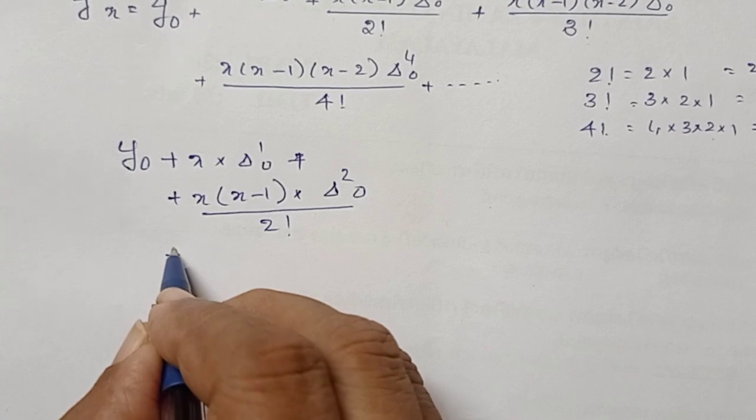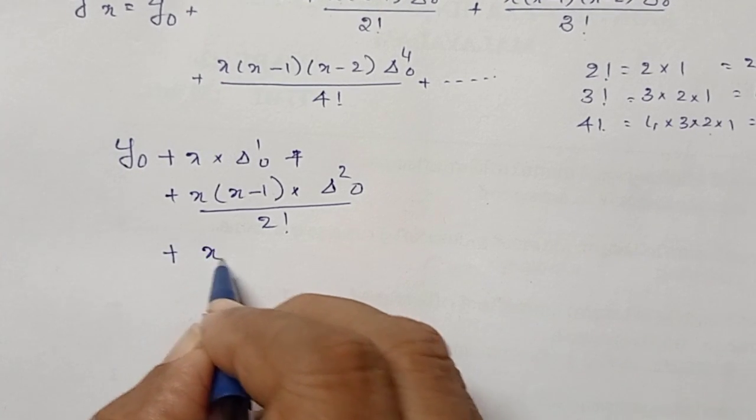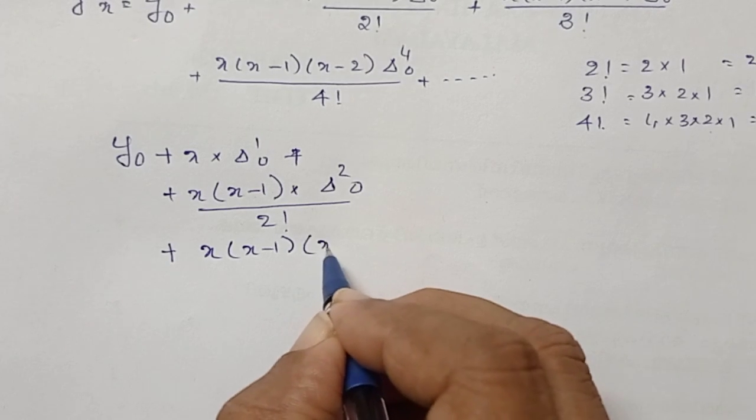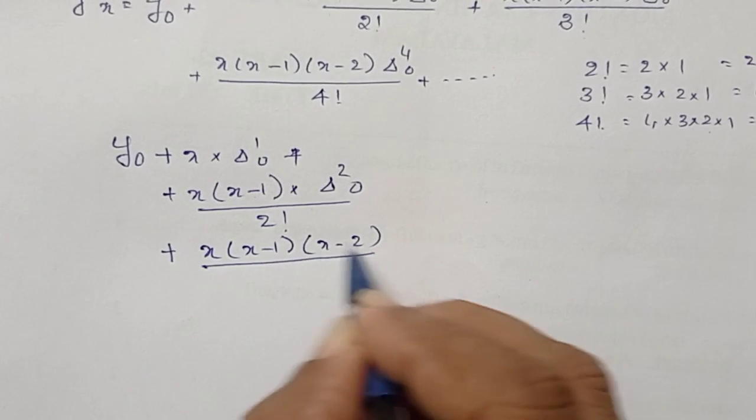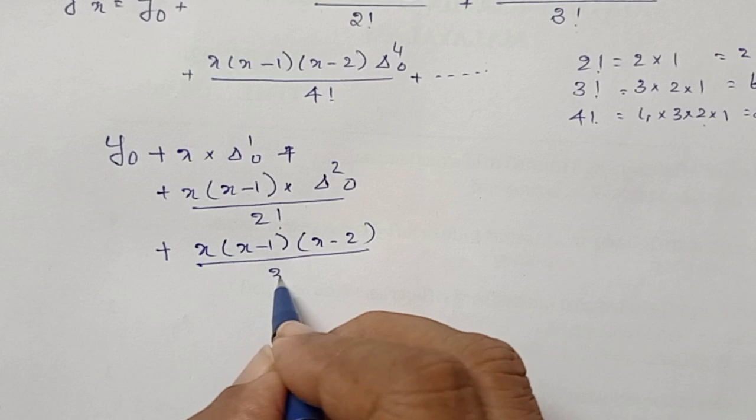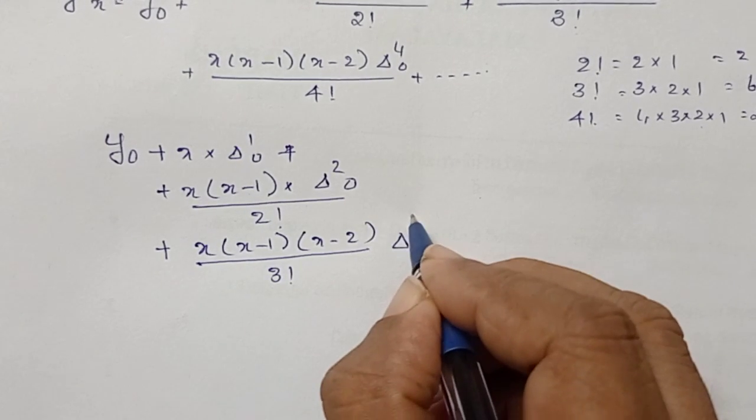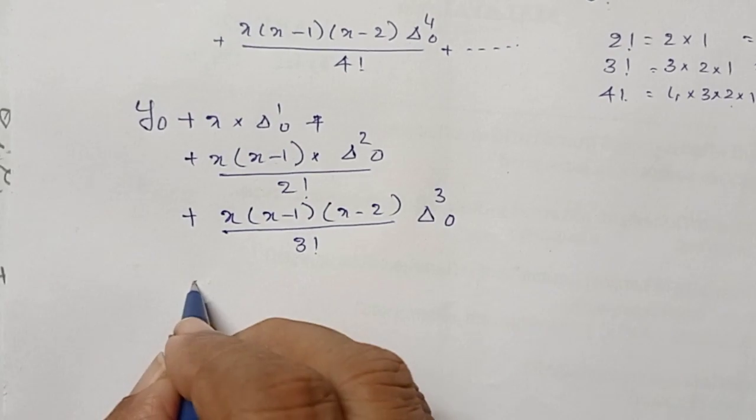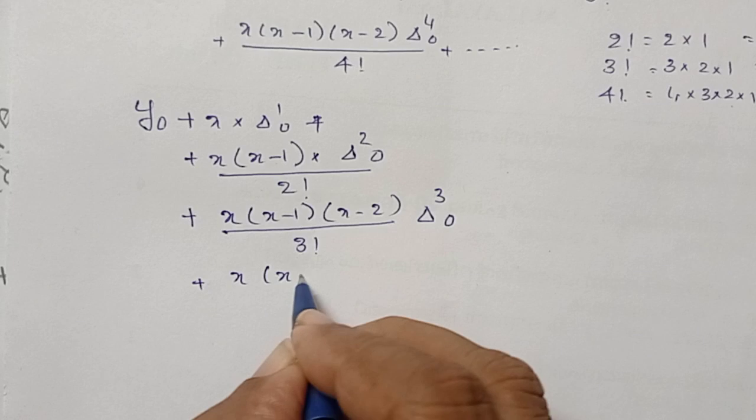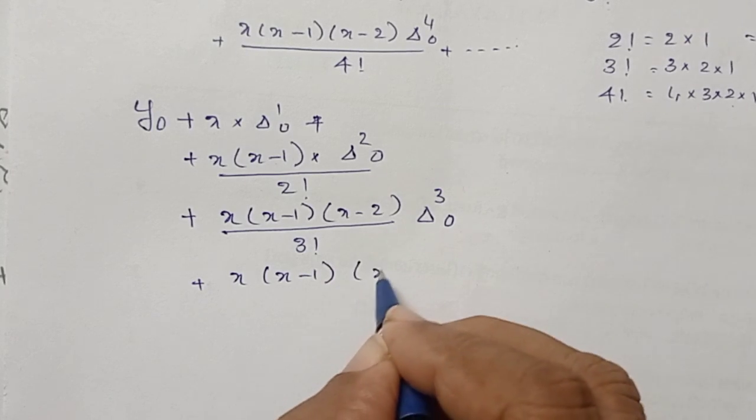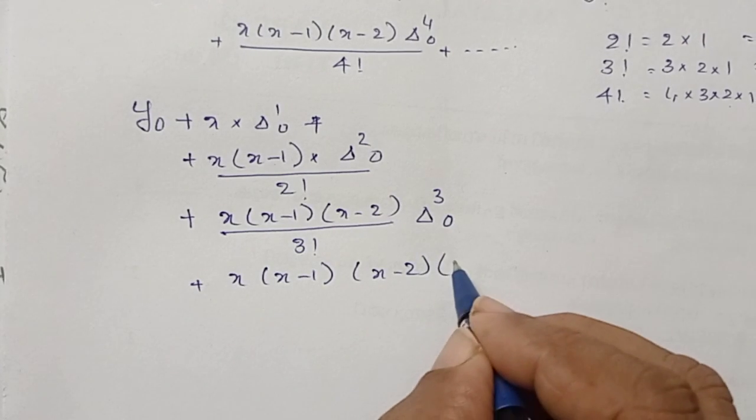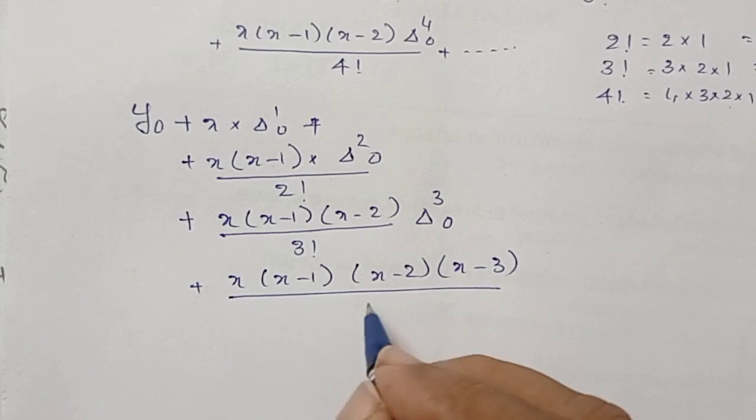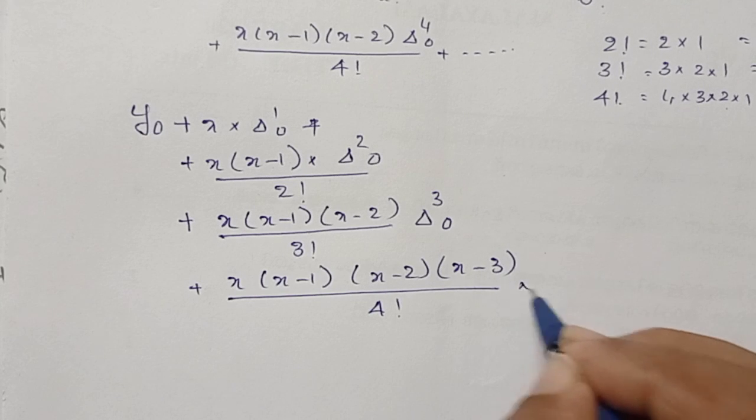The next step is plus x(x-1)(x-2) divided by 3 factorial into Δ³₀. Then x(x-1)(x-2)(x-3) divided by 4 factorial into Δ⁴₀.